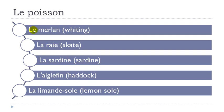Le merlan, la re — final E not pronounced. La sardine: you don't insist on the final E, it only gives you the N pronunciation. Sardine. L'aiguillat, l'aliment de sol.